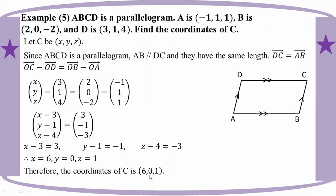They have the same magnitude and same direction, so they are parallel. Different magnitude but same direction, or opposite direction, also gives a parallel relationship. So in summary: same magnitude, same direction — parallel; different magnitude, same direction — also parallel. Thank you.